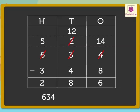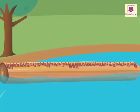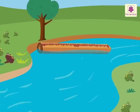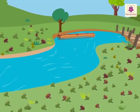634 minus 348 is equal to 286. Thus, 286 ants are left on the log of wood. It was amazing learning about subtraction in this beautiful forest!